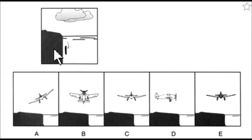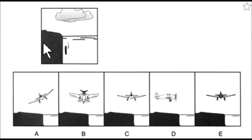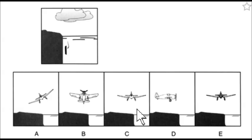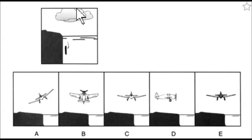You have to look at this box and understand that this is the pilot's eye view — as a pilot looks out of the cockpit, this is the picture he or she sees. Then you have to look at these aircraft and say which one of these airplanes represents this pilot and what he or she is looking at.